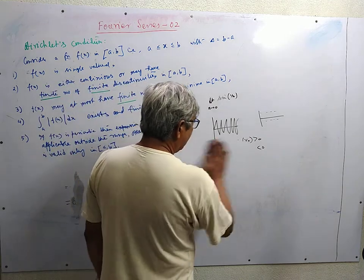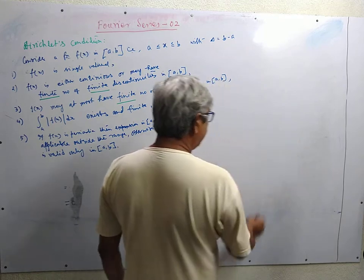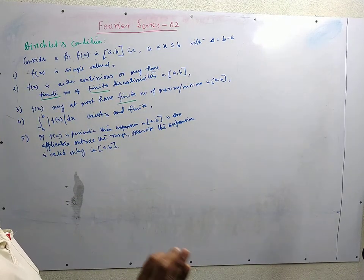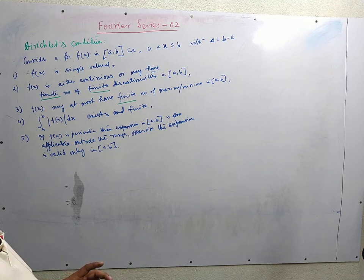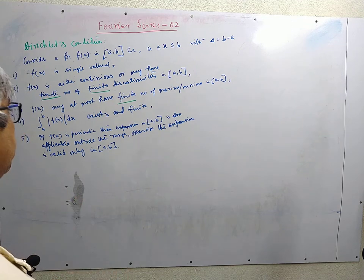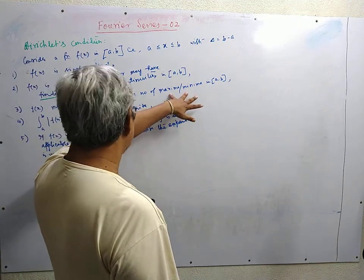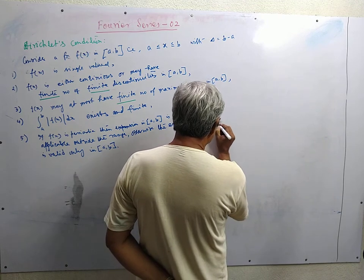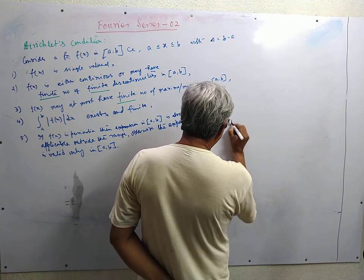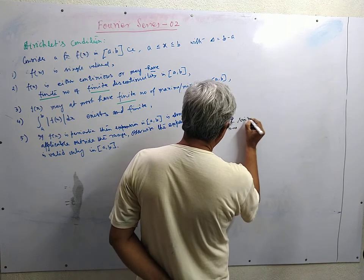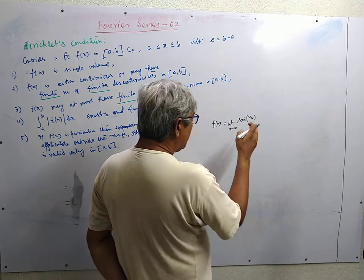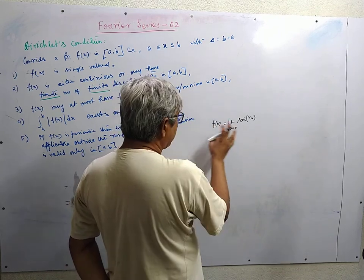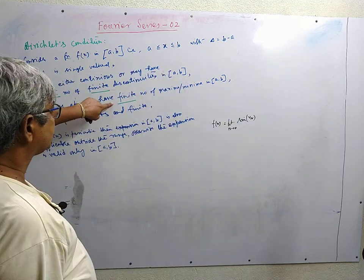Now come to the third point: maxima and minima. If we consider the tan function around pi/2, it doesn't have any maxima or minima — it has a discontinuity. Whenever we have a maxima or minima, the value of the function must be finite. Considering f(x) = sin(1/x) as x tends to 0, the function oscillates between plus and minus 1. So the maxima is +1, minima is -1, and the number of maxima/minima is infinite.